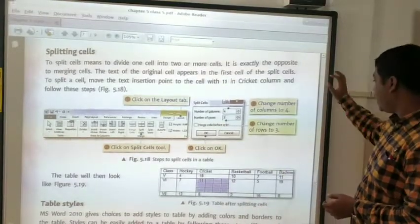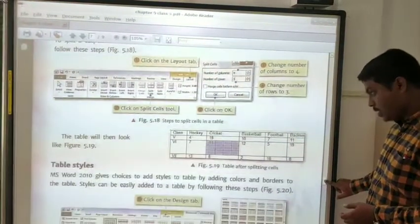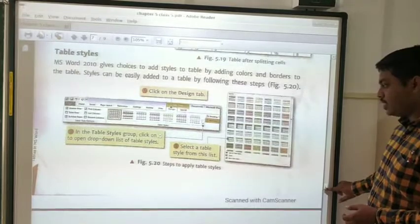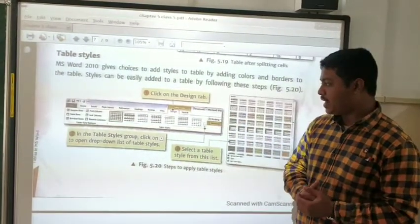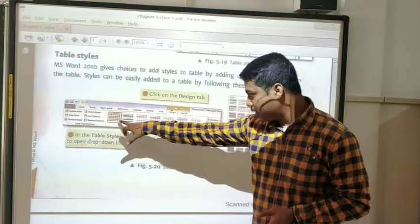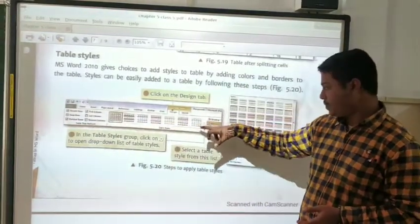Next is table styles. Different types of table styles appear here. To apply different table styles, you have to go to the Design tab. You can see different table styles appearing here.